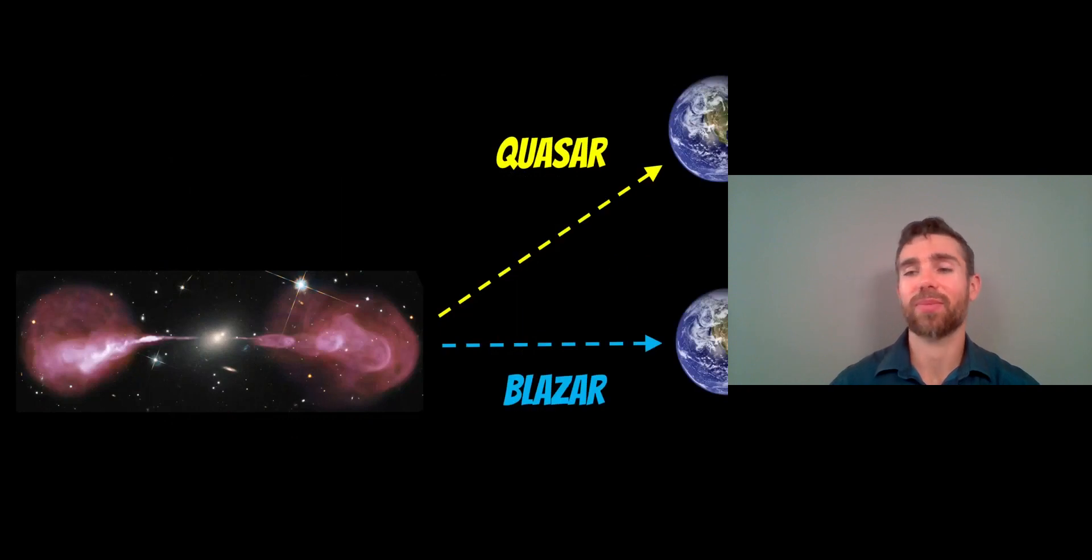The actual defining difference between quasars and blazars is the viewing angle. Depending on how we're looking at it, it might be a quasar or a blazar. For a quasar, the jets are slightly angled away from us—we're not getting a direct line of sight down the jet itself. Whereas for a blazar, the jet is directed straight to Earth. But as an object, they are pretty much the same thing. There's no physical difference between a quasar and a blazar; it's purely down to viewing angle.